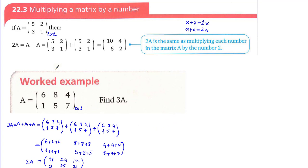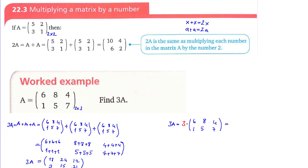Now by multiplying, as mentioned before, I'm going to solve the question using scalar multiplication. Let's write 3A, which equals 3 times A. The matrix A is [6, 8, 4; 1, 5, 7], so 3 times A equals...